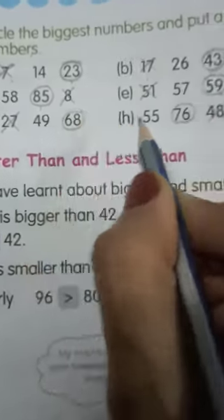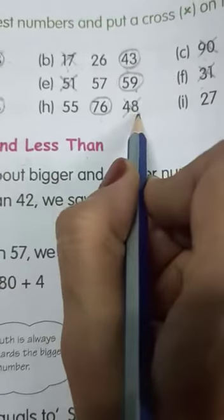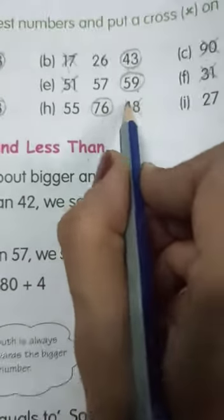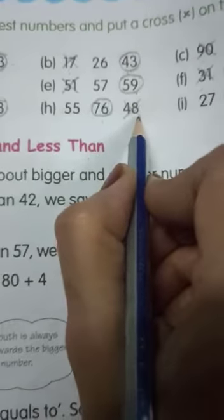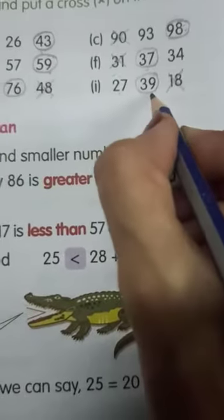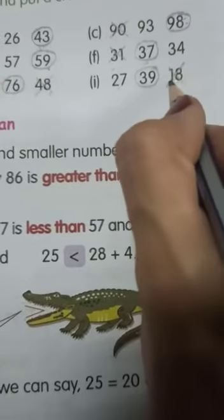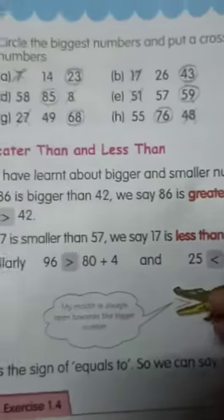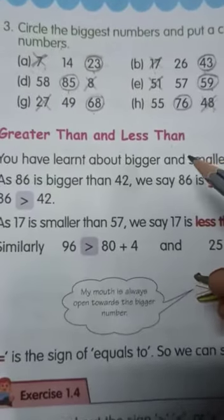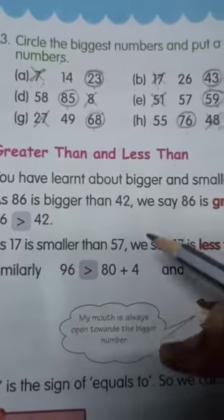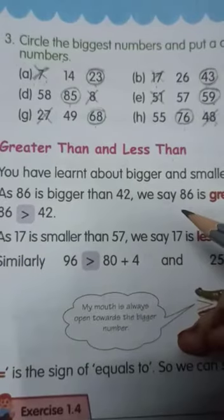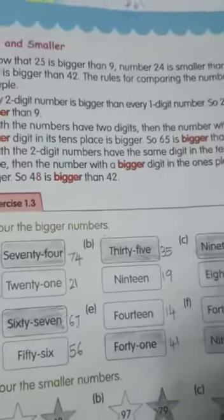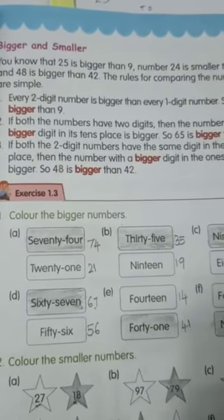From 35, 55, 76, 48 — circle the biggest number and cross out the smaller number. From 27, 39 and 18 — 18 is the smallest number and 39 is the biggest number. So children, we have completed exercise 1.3 with bigger and smaller numbers. Practice well children and be perfect in the concept of bigger and smaller. Take care of yourself and be ready for the next class. Allah Hafiz.